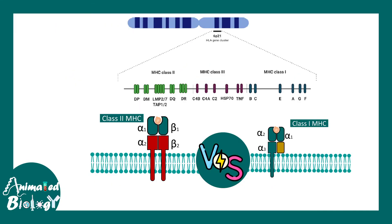Class 1 and class 2 MHC molecules are encoded by different loci. Class 2 is encoded by the MHC class 2 cluster — HLA-DR, DM, and DP all encode for class 2 MHC molecules, whereas MHC class 1 molecules are encoded by a completely different locus.